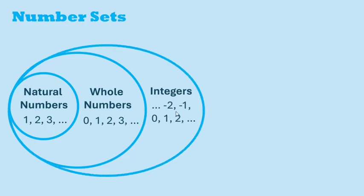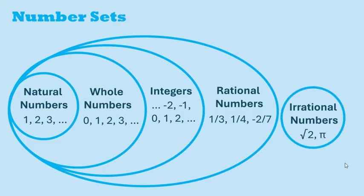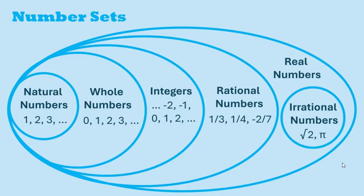Integers also include negative numbers. Rational numbers include all of those number sets and decimal numbers that can be written as a fraction. On the other hand, irrational numbers cannot be written in the form of a fraction. All these number sets are part of the real numbers.